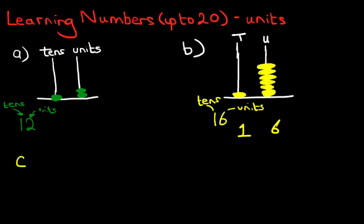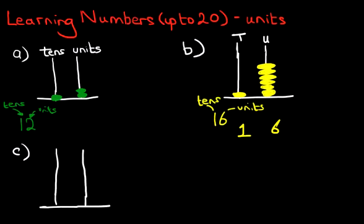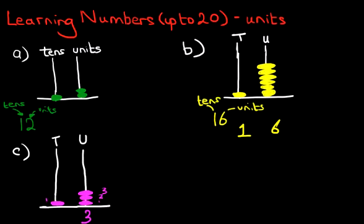Now I'm going to draw on the abacus and I want you to tell me which number it is. So we've got tens and units. I'm going to change color for this. Got one here and we've got one. So what number does that represent? Well, on the right hand side we've got one, two, three — so we've got three units. On the left hand side we've got one 10. So the number the abacus shows is 13.